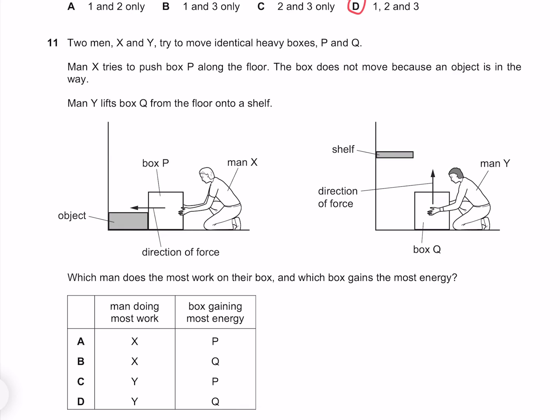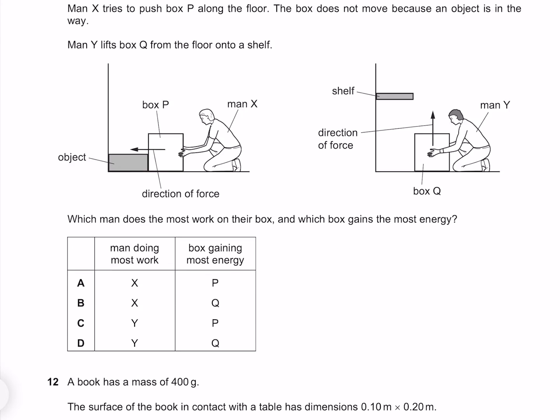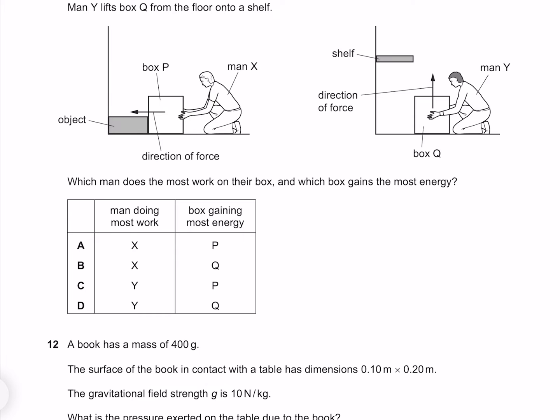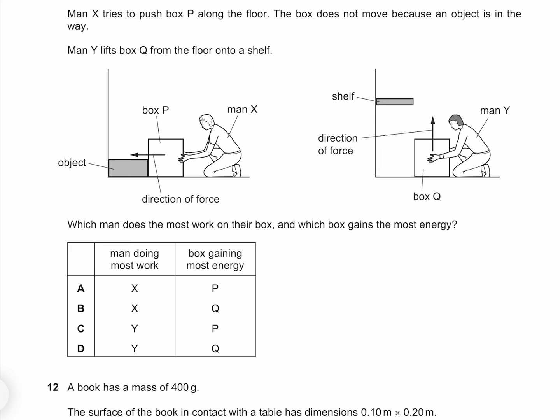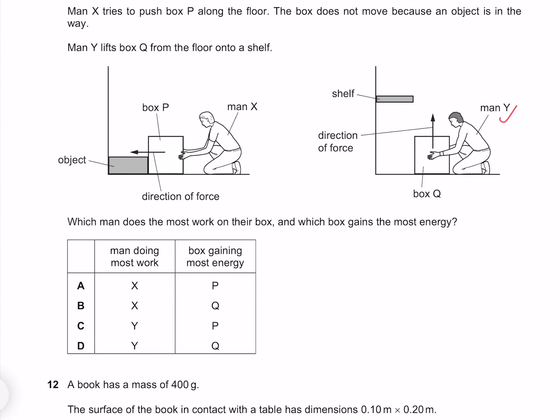Two men X and Y try to move identical heavy boxes P and Q. Man X tries to push box P along the floor. The box does not move because an object is in the way. Man Y lifts box Q from the floor onto a shelf. Which man does the most work on their box, and which box gains the most energy? Lifting the box is going to be doing the most work, so we know it must be man Y. And whereas box P is going to gain a small amount of thermal energy, we can consider it insignificant compared with the gravitational potential energy gained by box Q. So our answer must be D.